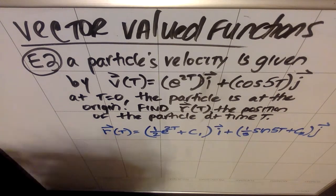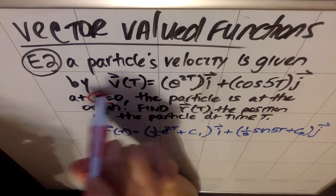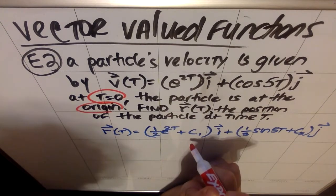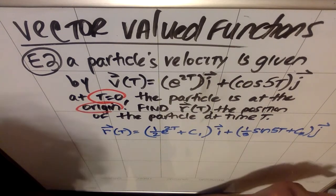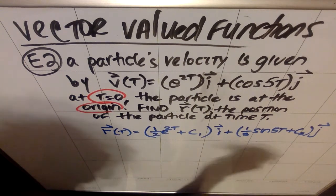The issue is that I now have to use the initial value that I was given. What I was told was that t equals 0, the particle is at the origin, meaning that both this coordinate, when I plug in t, is 0, and this coordinate will come out to be 0 because the origin is 0 in the x direction and 0 in the y direction.